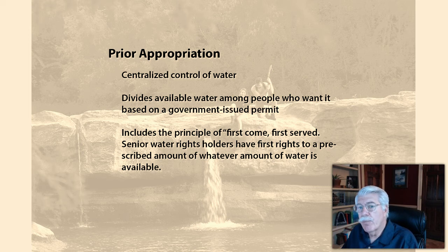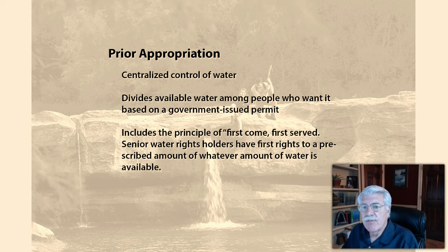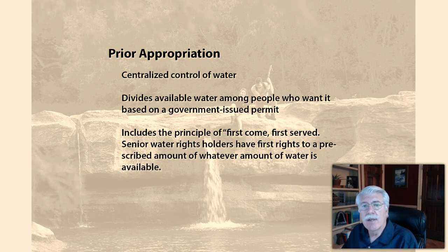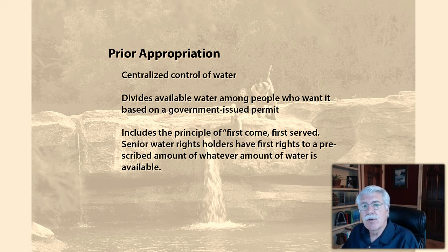Prior appropriation gives the right to a certain amount of water to certain users. It divides available water among people who want it based on a government-issued permit that includes the principles of first-come, first-served. Senior water rights holders have first rights to a prescribed amount of whatever amount of water is available. This is often also referred to as the first-in-time, first-in-right rule.